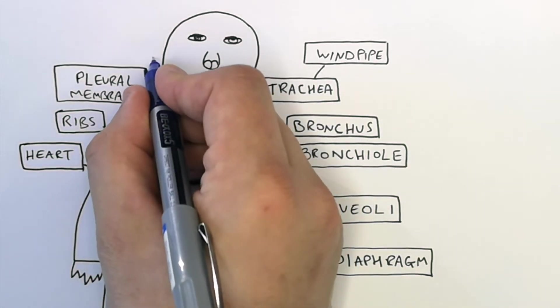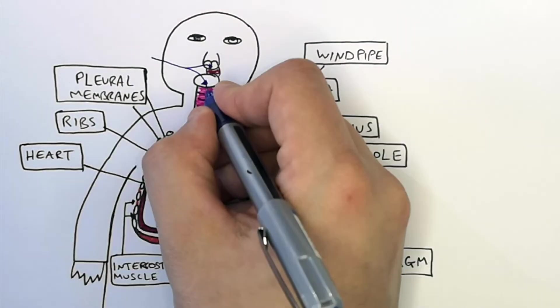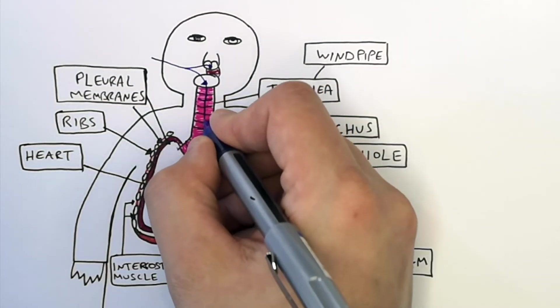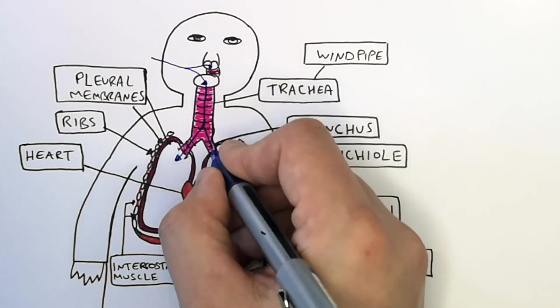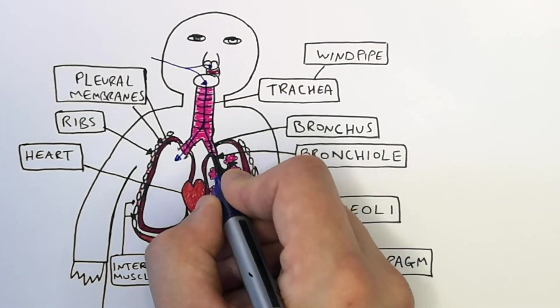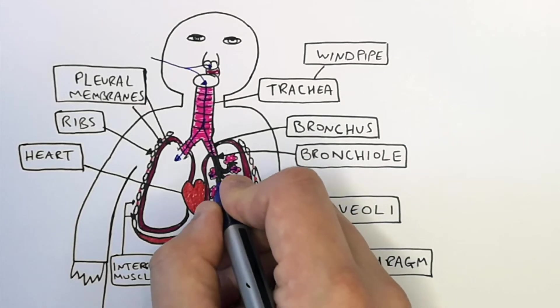So when we inhale, we inhale air through our nose and our mouth. This then travels down the trachea, through our bronchi, or each bronchus, into the 30,000 bronchioles in each lung. The bronchioles supply the air to the alveoli.